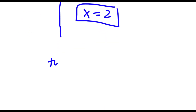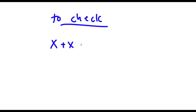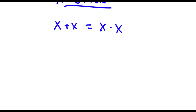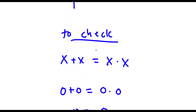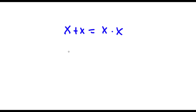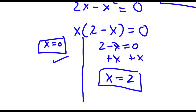Alright, so now to check — my original equation was x plus x is equal to x times x. Let's first start with x equals zero: zero plus zero is equal to zero times zero. Zero plus zero is zero, and zero times zero is zero as well, so this is right. Now if x equals 2, I have 2 plus 2 is equal to 2 times 2. 2 plus 2 is equal to 4, and 2 times 2 is also equal to 4, so 4 equals 4 as well, meaning our two solutions are both correct.